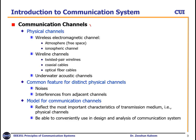What are the communication channels? The channel is the most important part in communication systems because the overall performance of the system depends on the communication channel. There can be numerous types of channels — for example, physical channels, which include wireless electromagnetic channels. There can be atmosphere, free space, and ionospheric channels, as well as wireline channels such as twisted pair, coaxial cable, optical fibers, and underwater acoustic channels.